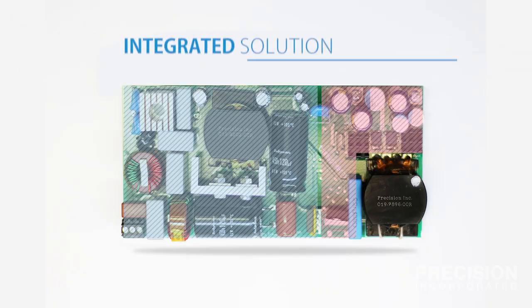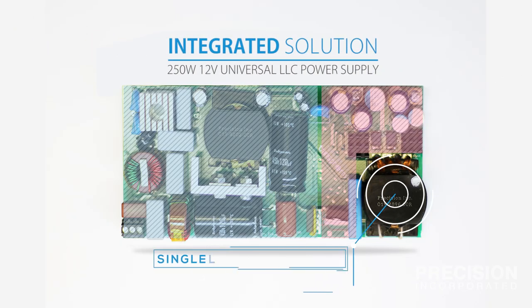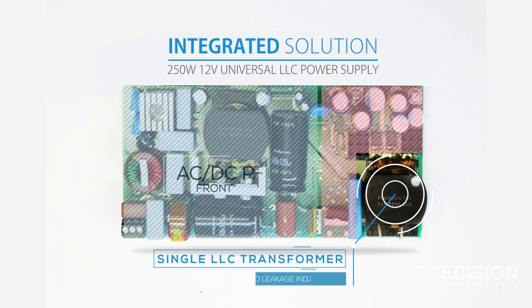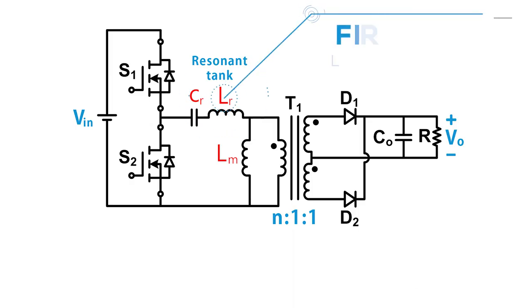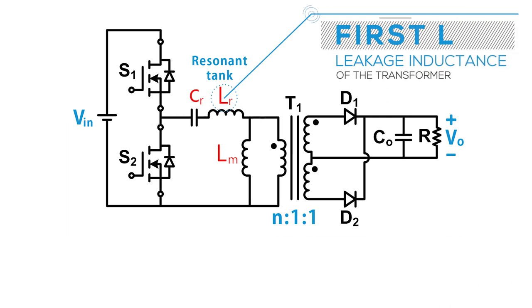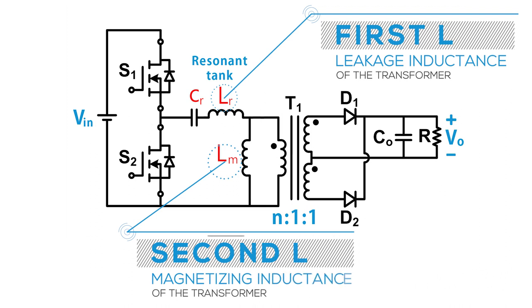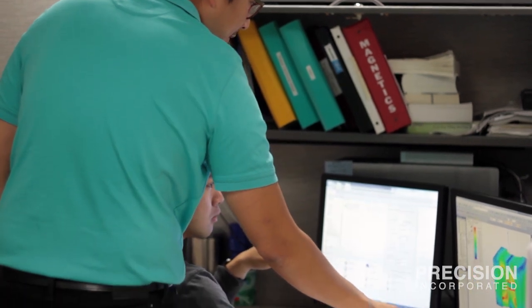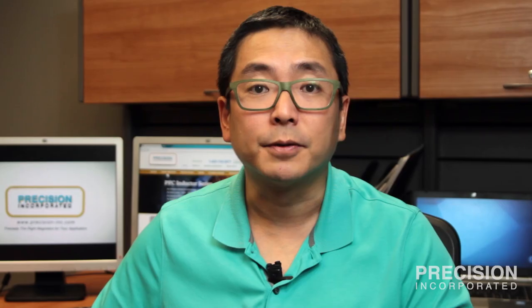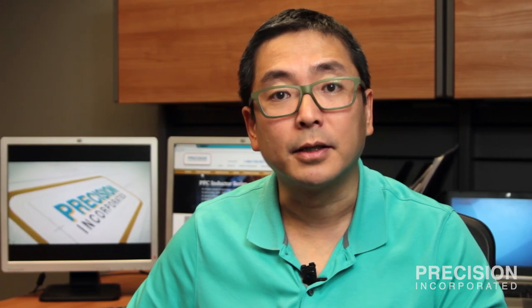An integrated solution requires only a single LLC transformer. The two inductors required for the LLC topology have been combined into one magnetics. The first L in the LLC circuit is built in as the leakage inductance of the LLC transformer. The second L is the magnetizing inductance of the transformer. It is less costly and typically takes up less real estate because of the single component approach, but it is more complicated to design the LLC transformer because we need to generate and control sufficient amount of leakage inductance that are balanced in the LLC circuit.